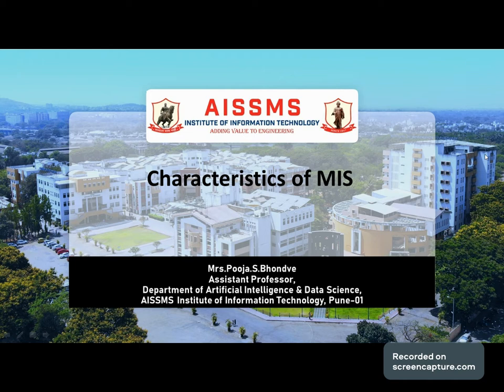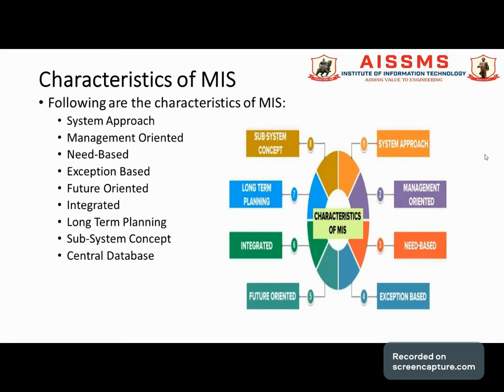Another approach to MIS is that it is a system that aids management in making, carrying out, and controlling decisions. Based on these definitions, MIS has different characteristics. In today's session we will cover eight main characteristics of a management information system as listed in the slide.